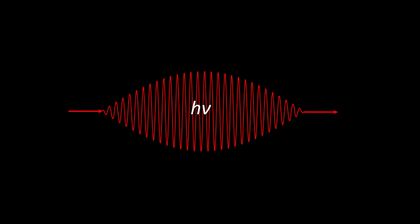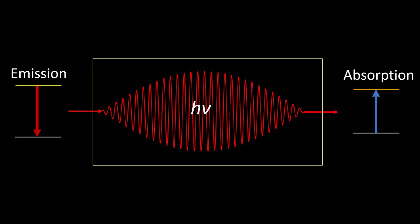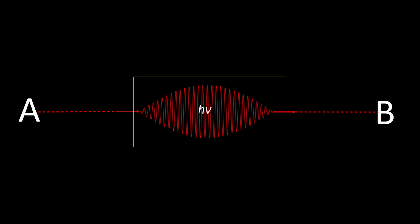This is a photon. At least, this is the way that it's often depicted. And that's because we assign both particle and wave properties to it. Therefore, it's often displayed as some wavy particle — some discrete intermediate between the emission and the absorption of radiation. A particle of light, if you want, traveling from A to B.